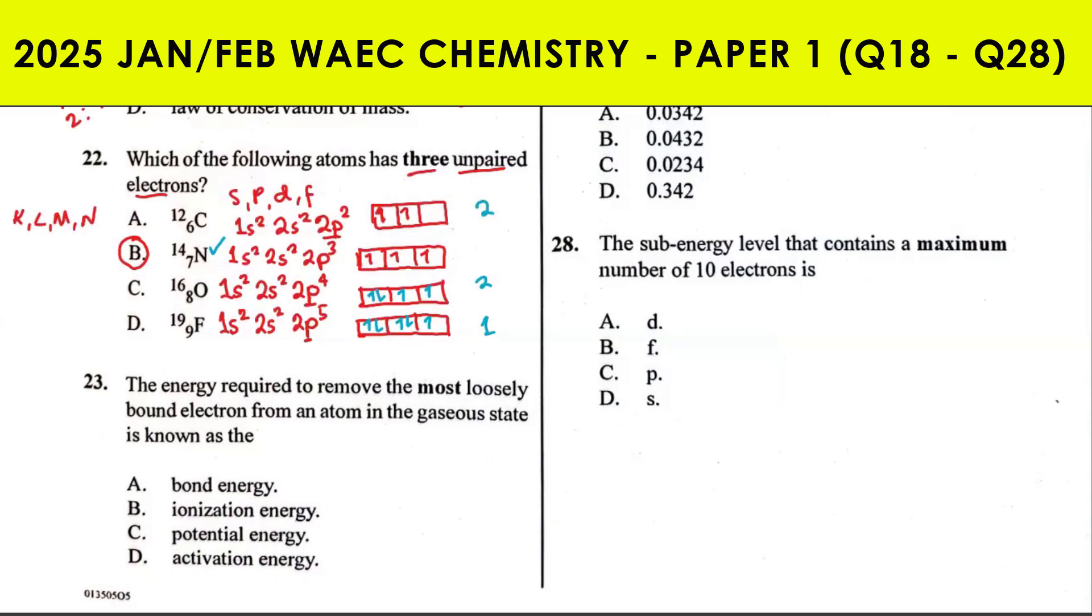Question 23 says the energy required to remove the most loosely bound electron from an atom in the gaseous state is what? That is ionization energy. It is always an endothermic process - its value is always positive. Bond energy is the energy required to break or form one mole of covalent bonds. Potential energy is the energy a body possesses due to its position, while activation energy is the minimum energy reactants must possess for a reaction to occur, or it can be said to be the energy barrier of the reaction.